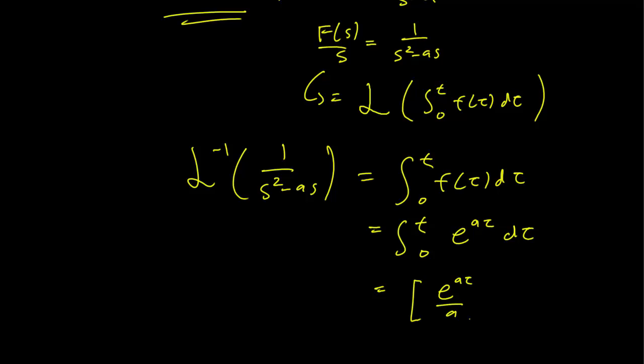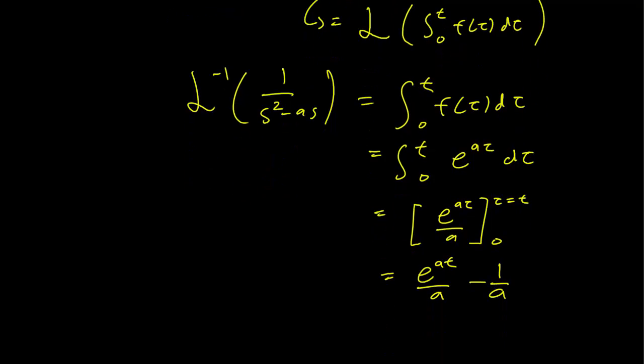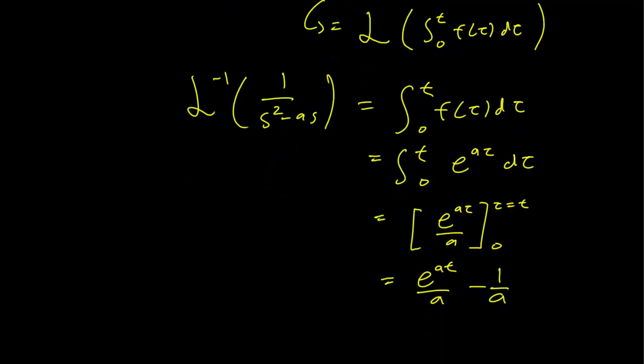We evaluate e^(aτ) over a from τ equals 0 to τ equals t. And this is just going to be e^(at) over a minus 1 over a. And that is the inverse Laplace transform that we were looking for.